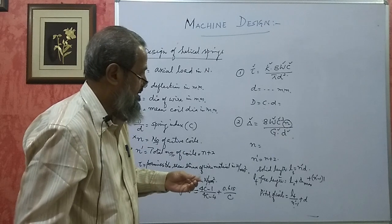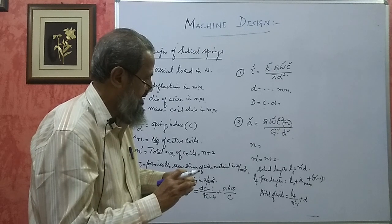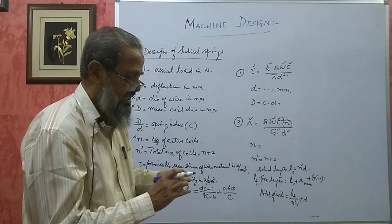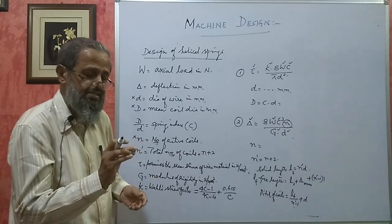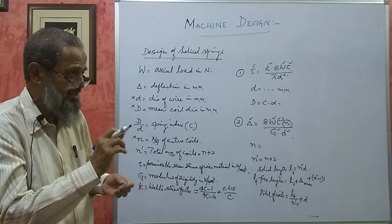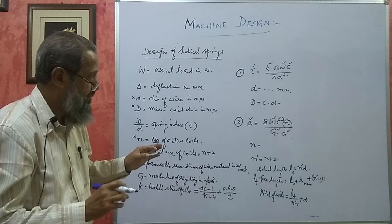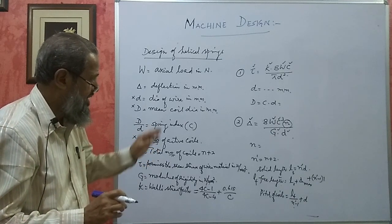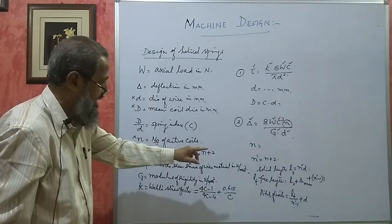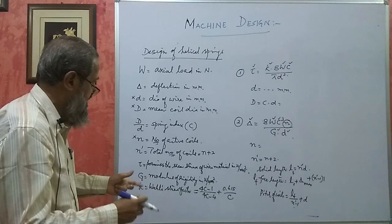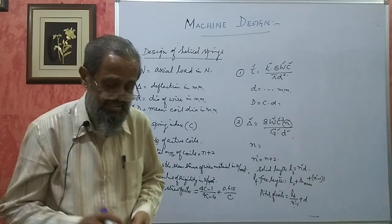Then some more definitions: stiffness of the spring is defined as load per unit deflection — mathematically the ratio of axial load W to deflection delta gives you the stiffness of the spring. Stiffness is also called rate of the spring. These definitions — what is spring index, what is free length, what is solid length, what is stiffness — can be asked in theory.